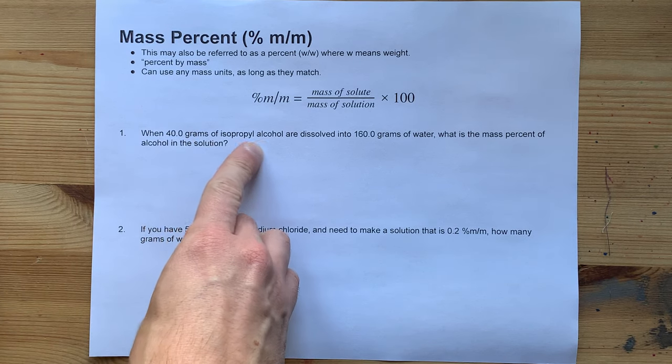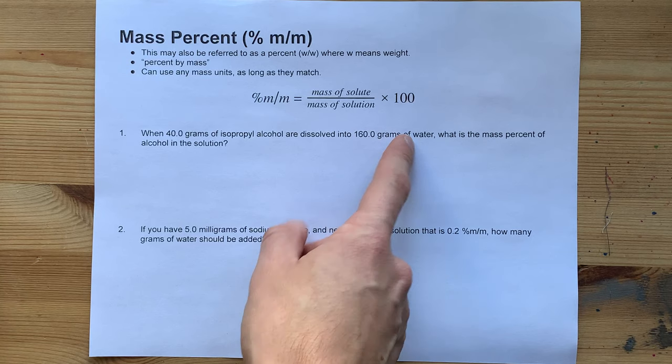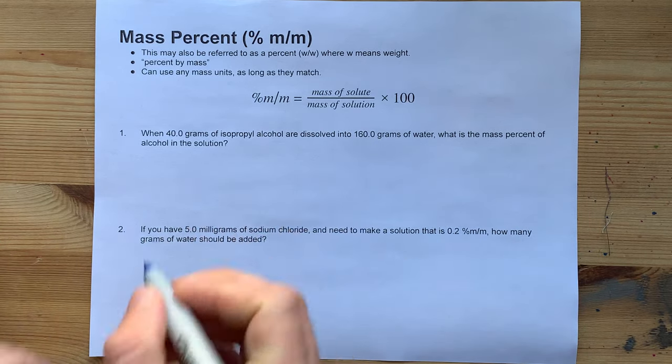40 grams of isopropyl alcohol are dissolved in 160 grams of water. What's the mass percent in that solution?